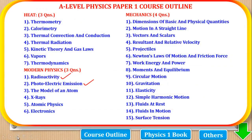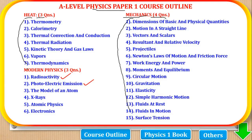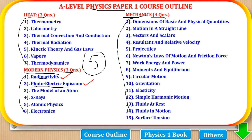Before we proceed, let's just look at the course outline of this paper. Physics paper 1 is divided into 3 parts. The first part is mechanics, where 4 questions come from these topics. The second part is heat, where 3 questions come from these topics. The third part is modern physics, where 3 questions come from these topics. The student is expected to choose any 5. We have already looked at radioactivity, and now we are going to look at photoelectric emission.